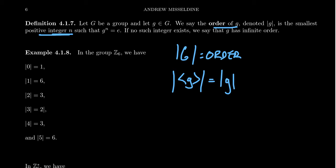Now if no such integer exists, we say that g has infinite order, because in that case g would produce something isomorphic to the infinite cyclic group. Let's take an exact example: Z6, and look at the orders of elements there.